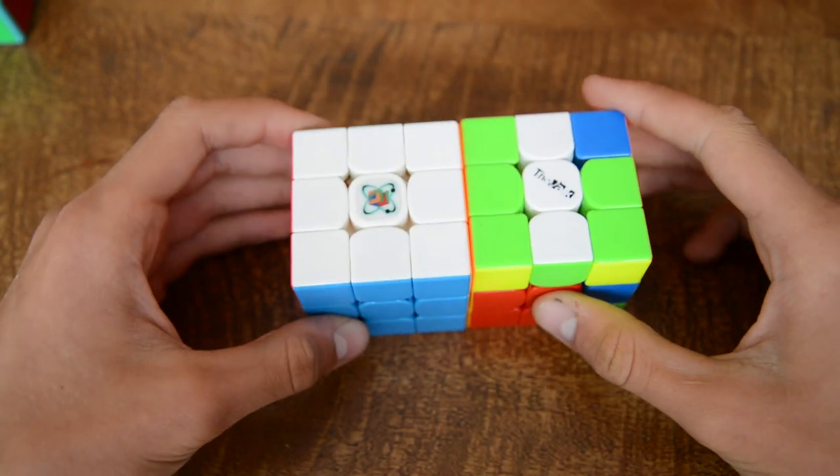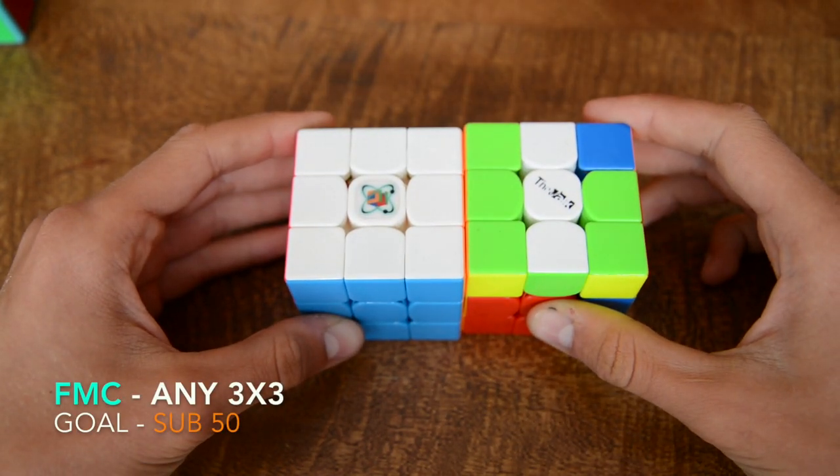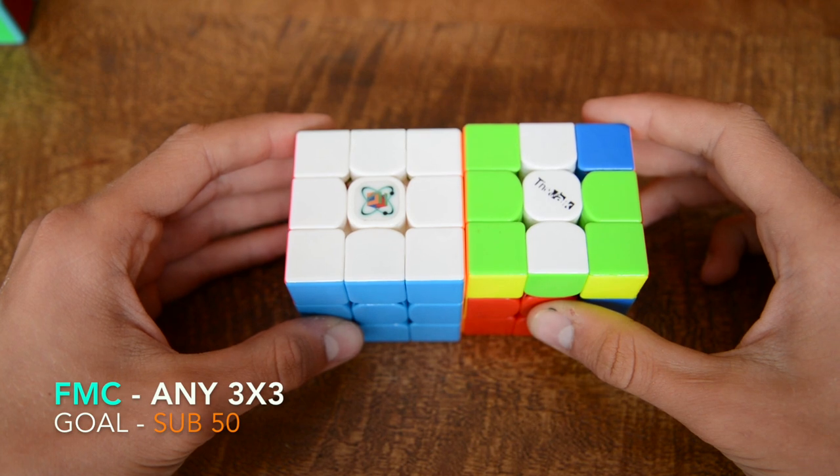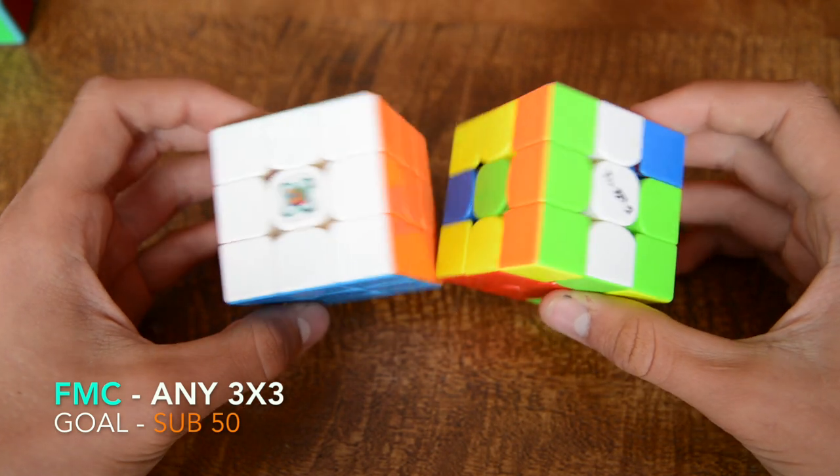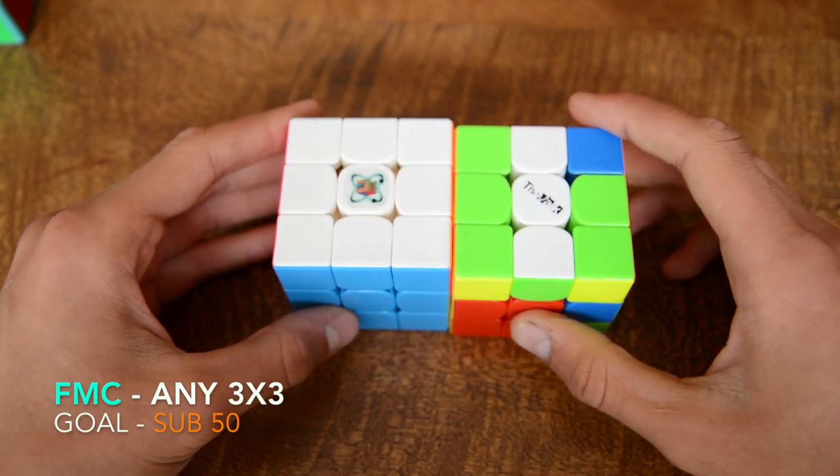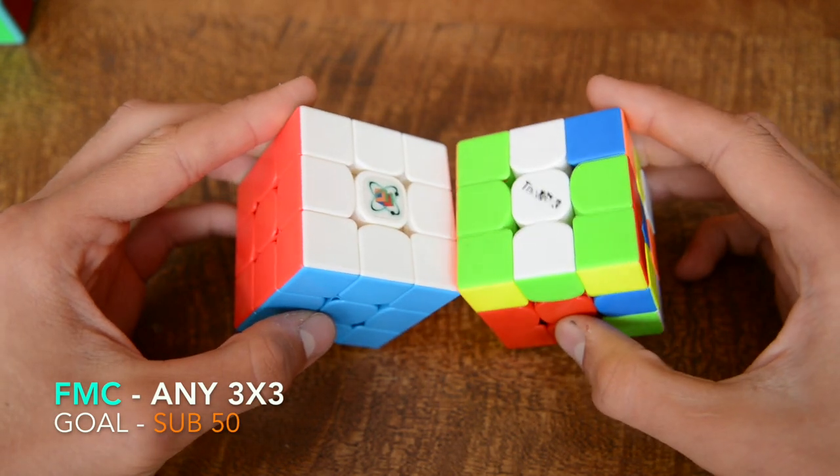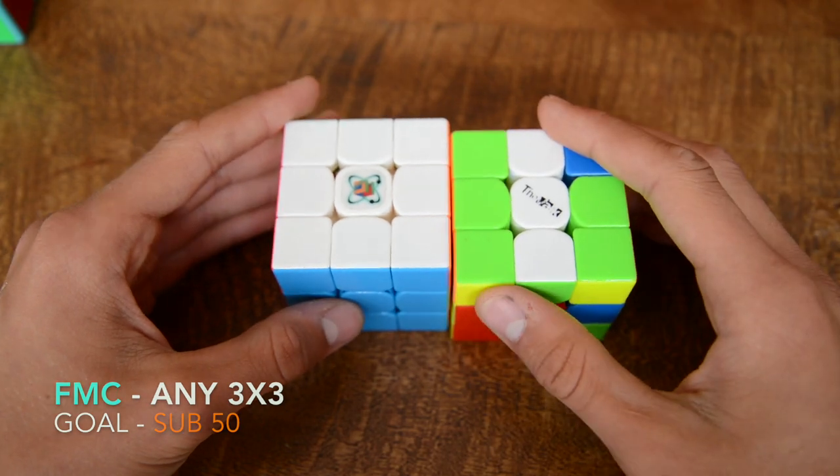Next up we have fewest moves and my goal is to get anything good. Good for me counts like sub 50 moves and I'll be using these 2 cubes.